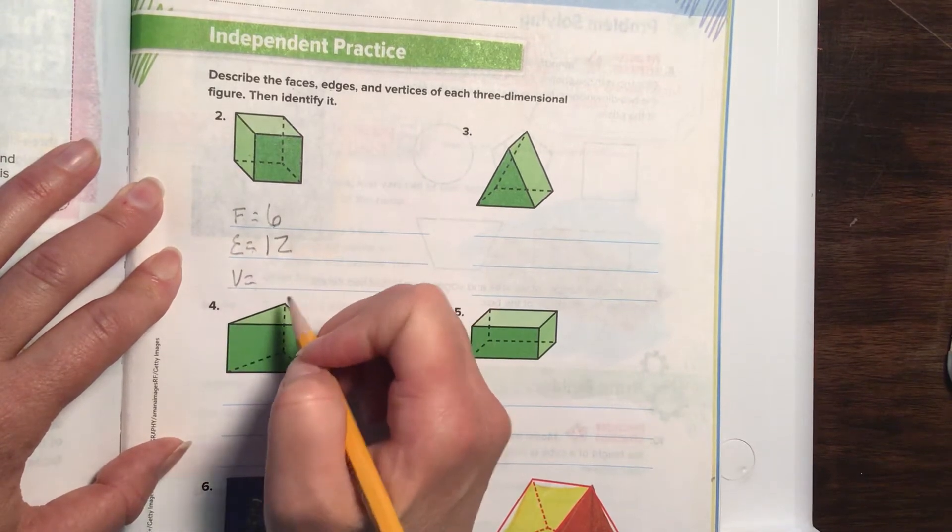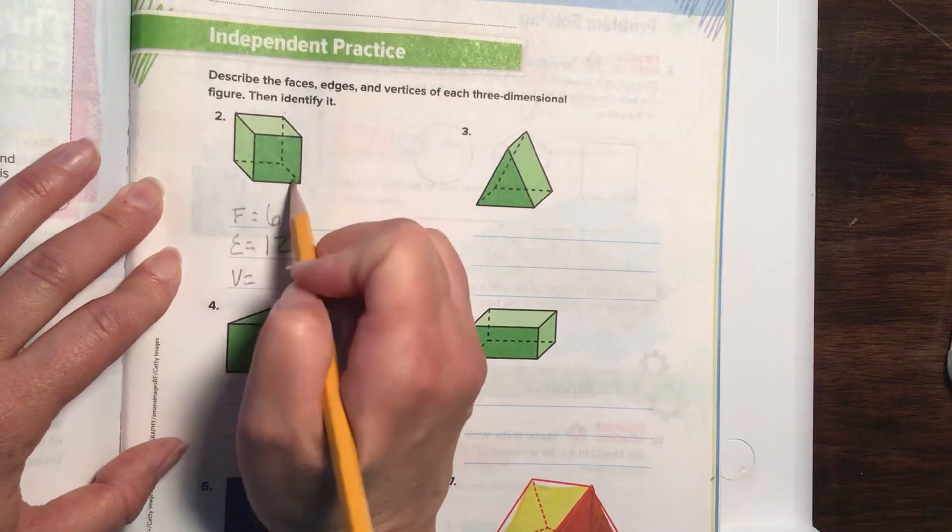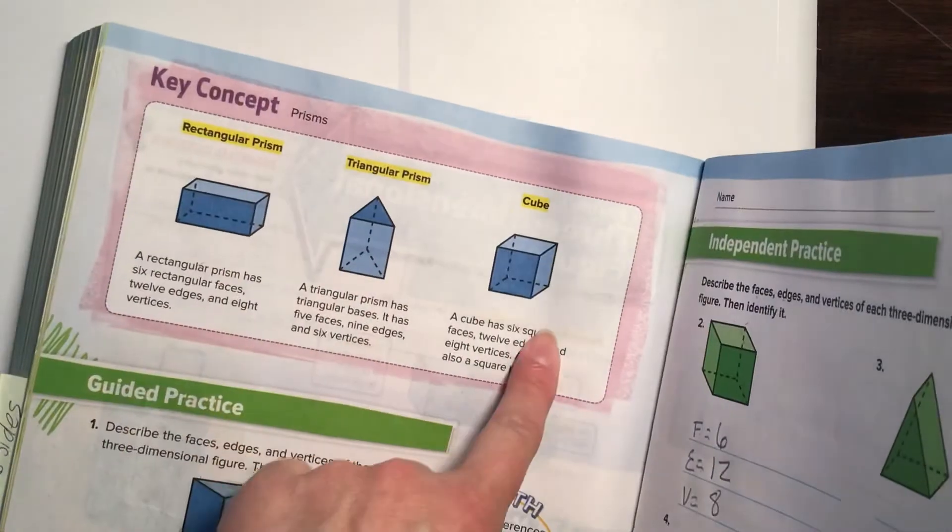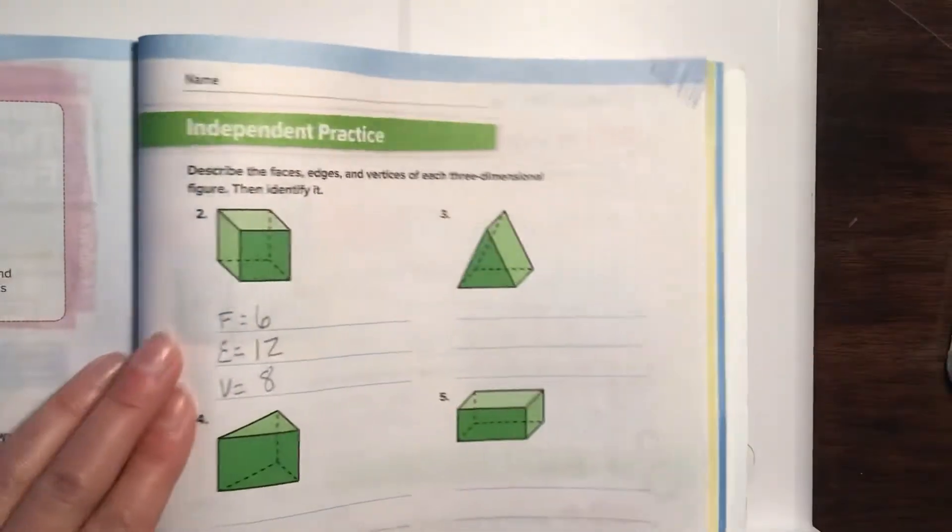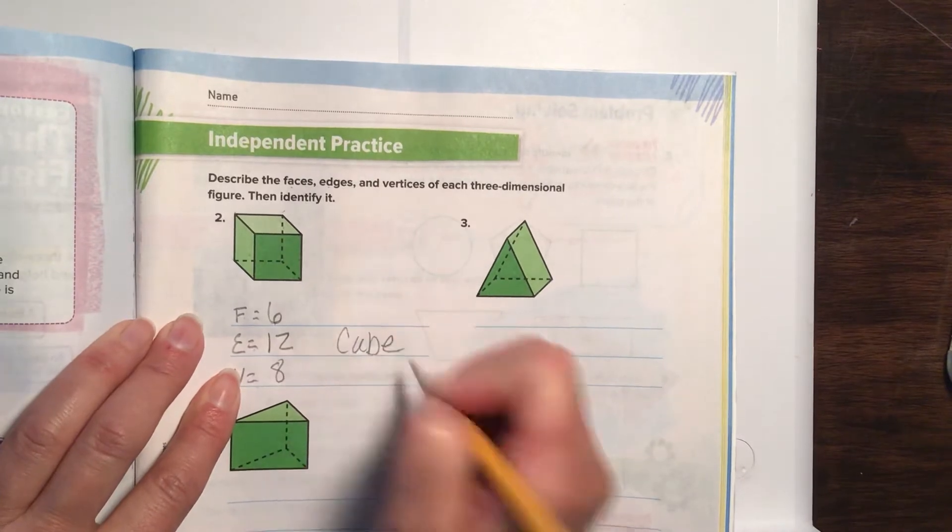Vertices are corners. Let's count them: one, two, three, four, five, six, seven, eight. So which one of these does that fall into? Yep, you're right. It is a cube.